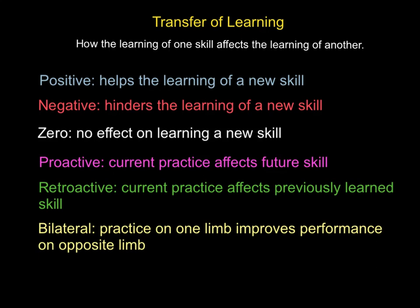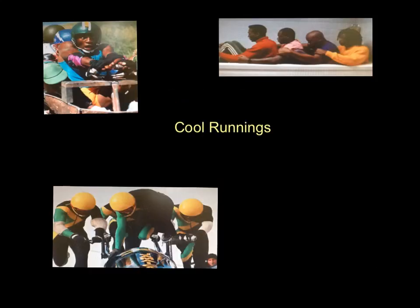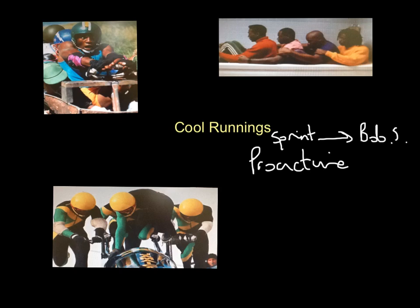For a quick practical example, think of the film Cool Runnings — it's based on a true story. You've got sprinters who didn't qualify for the Summer Olympics and transferred over to bobsledding. As sprinters looking at bobsledding, you're looking at proactive transfer going from sprinting to bobsled. Did it work out? It did — they became good bobsledders, so it was also positive transfer.